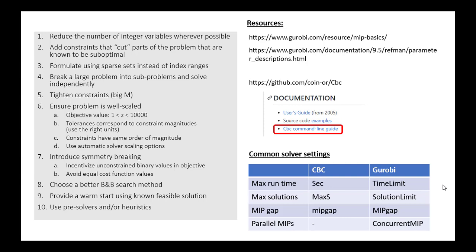You can do that with this maximum solutions limit. In CBC, that's specified with the max s parameter. In Gurobi, that's solution limit. So you might do something like, say, give me one solution, give me five solutions, and then pick the best one, et cetera.